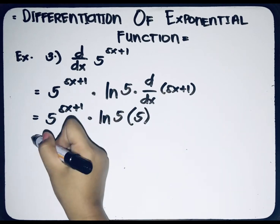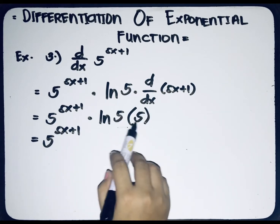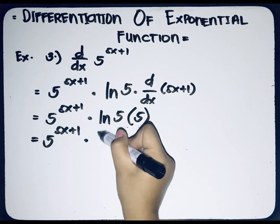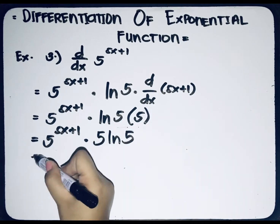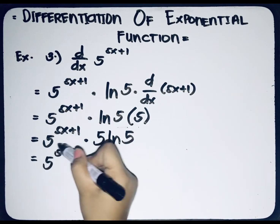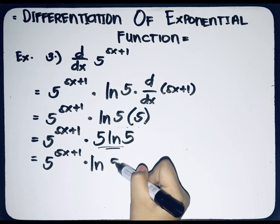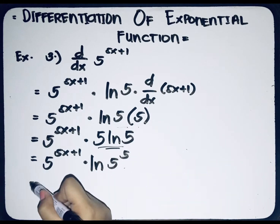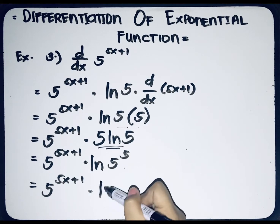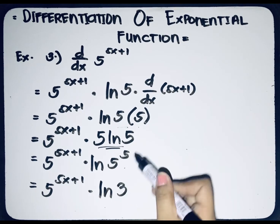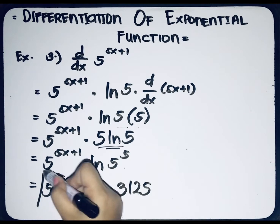Combining the two constants: 5 raised to (5x + 1), and ln(5) multiplied by 5 equals 5·ln(5). By applying the identity, 5·ln(5) can be written as ln(5 raised to 5). Since 5 raised to 5 equals 3125, the final answer is 5 raised to (5x + 1) multiplied by ln(3125).